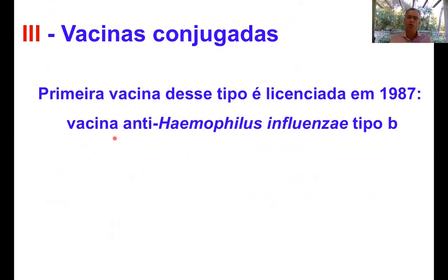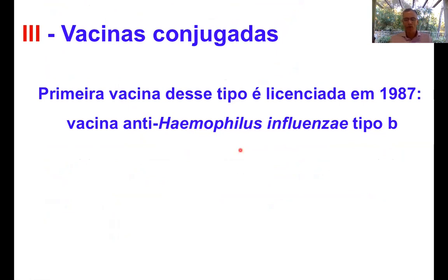A primeira vacina conjugada é licenciada em 1987, contra o Haemophilus influenzae tipo B. Depois dessa vacina, diversas outras vacinas conjugadas vão ser licenciadas e vão substituir as vacinas feitas somente de polissacarídeos. Nos anos 2000, teremos vacinas conjugadas que em uma única vacina protegem contra diversas bactérias — vacinas quadrivalentes, heptavalentes, 13-valentes. Essas vacinas conjugadas têm um papel muito importante na prevenção de pneumonia e de meningites.